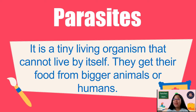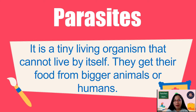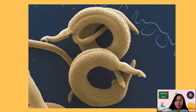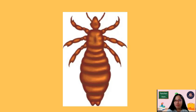Lastly, we have protozoa, which is under parasites. There are three kinds of parasites: protozoa, helminth, and arthropods. They get their food from bigger animals or humans, and they cause diseases in the animals or humans they live on. That's it, class. Thank you and goodbye.